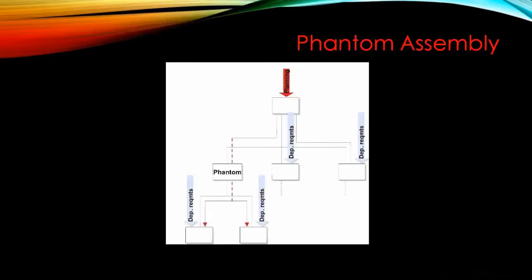First we'll start with phantom assembly. A phantom assembly in bill of material is an assembly where we define it as a phantom assembly BOM. In the form, a phantom assembly does have another BOM, but it's different from a normal BOM. This phantom is not itself a product — you can think of it as a description only.